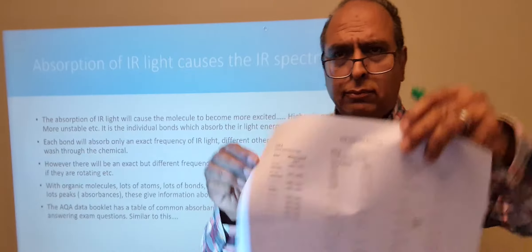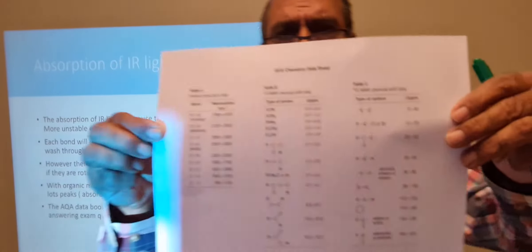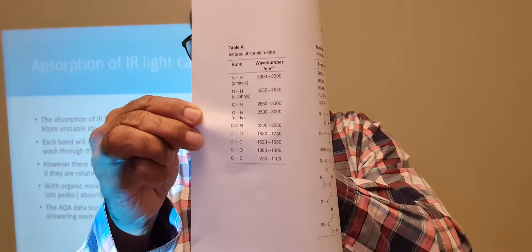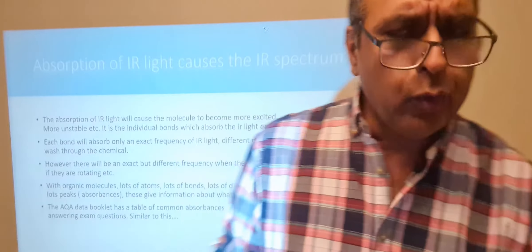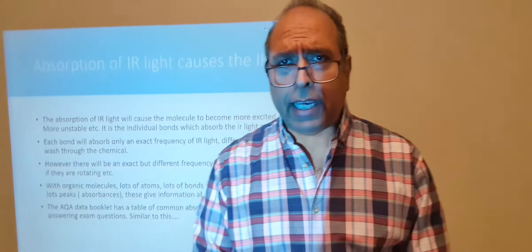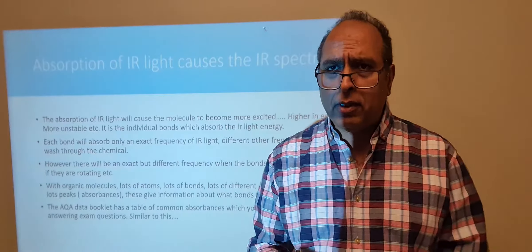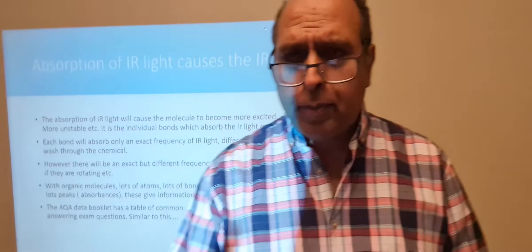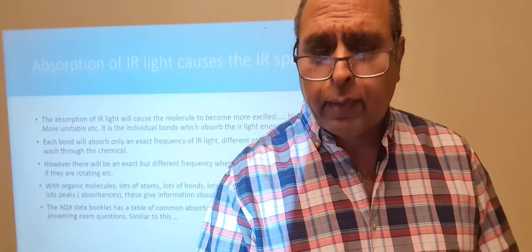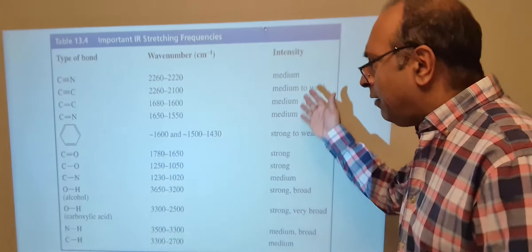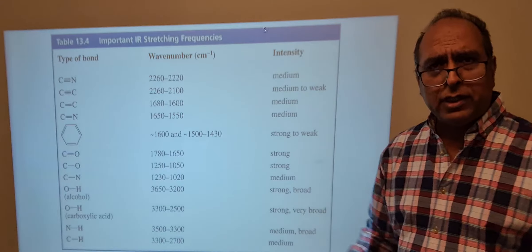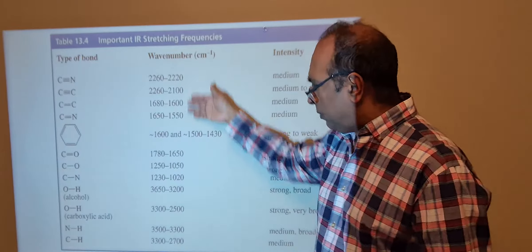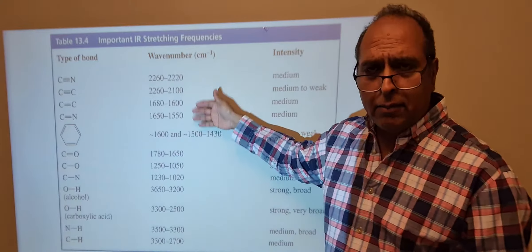That's the infrared table you will be given in your data book, and you'll have to use it. The table tells you that a particular bond will absorb at particular frequencies. I'm using a similar version sourced online since copying the exact table proved difficult.